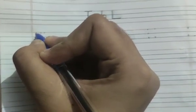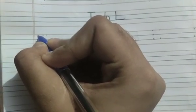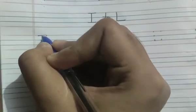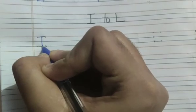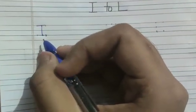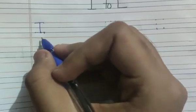How to make I? Make a sleeping line, standing line, sleeping line. I. I and ice cream, I and ice cube, I and ink pot.